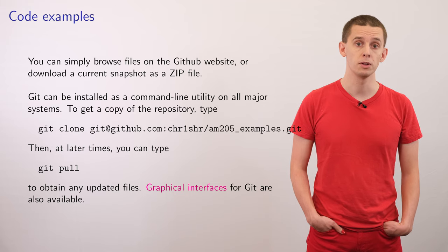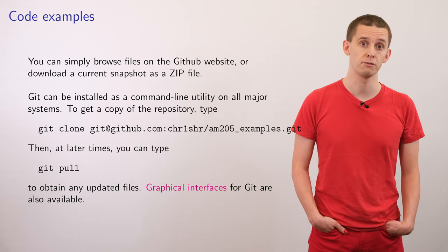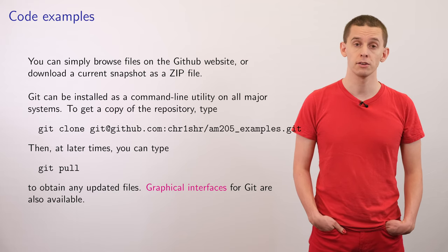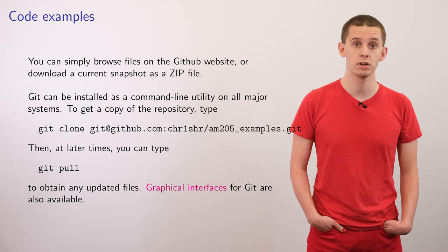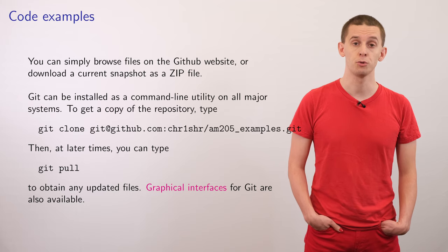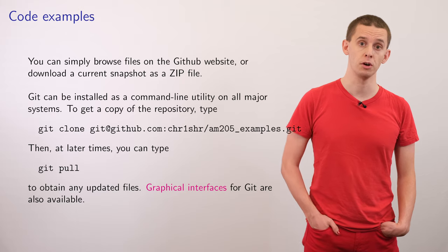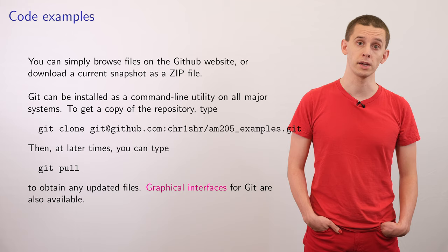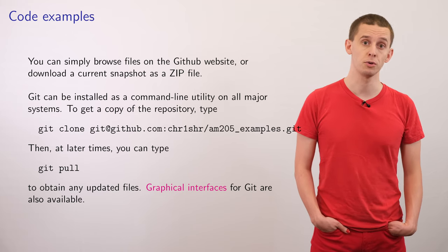However, if you want to download them, then you need to make sure that you have the Git client available, which is a command line program that's available for most major software platforms. And once you have this, you can type the command git clone git@github.com:chr1shr/am205_examples.git and that will make a copy of the entire repository onto your computer. If at any point updates are applied to the repository on GitHub, then you can use the command git pull to sync your repository to the one on the server.